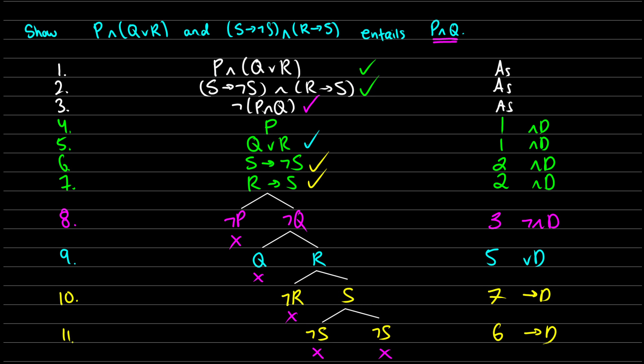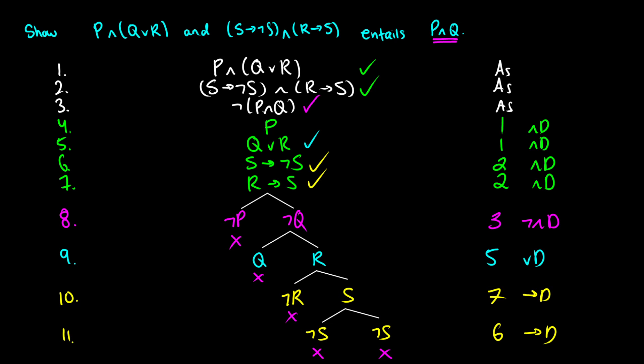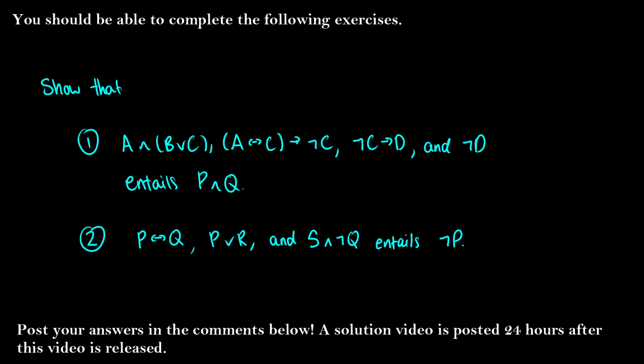So at this point, our entire tree has closed. We have a closed tree. So we have proven entailment. Because we've taken our wffs in capital gamma. So p and q or r, s arrow not s and r arrow s. And we've shown that that entails alpha by taking the negation of alpha as our assumption. So at this point, hopefully, you will be able to complete the following exercises.